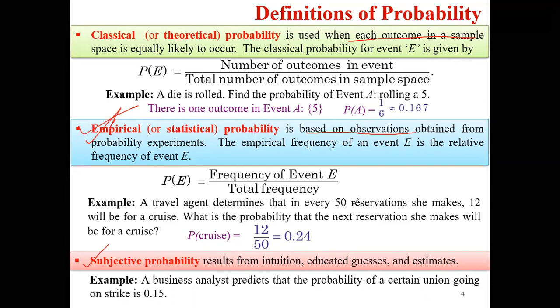For example, a travel agent determines that out of every 50 reservations he makes, 12 will be for a cruise. So we can find out that there is a 24% chance that the next person who reserves will book a cruise.